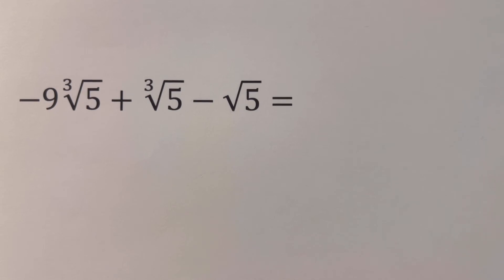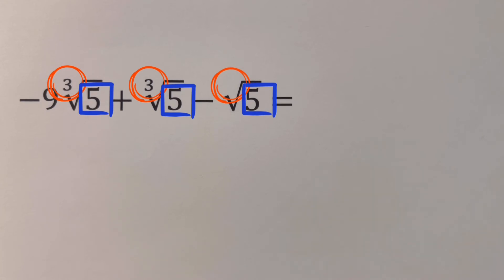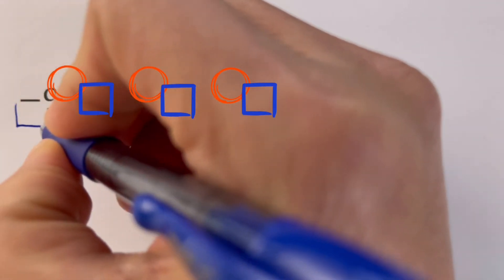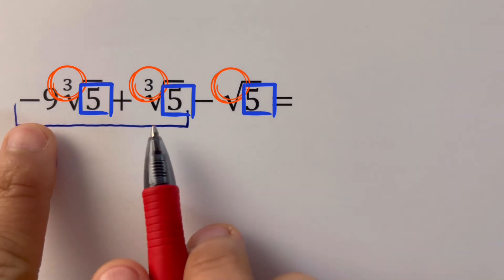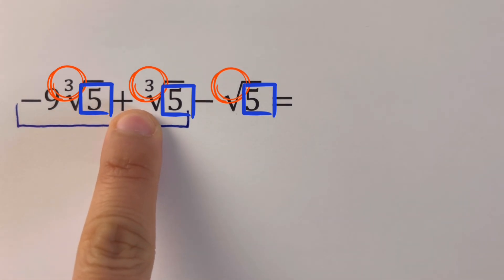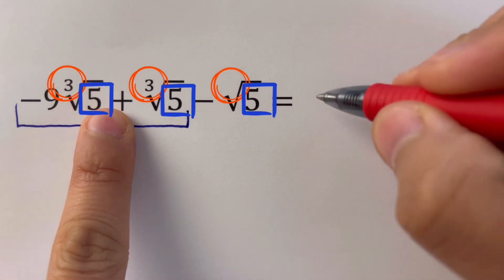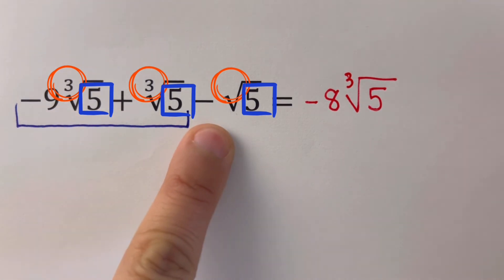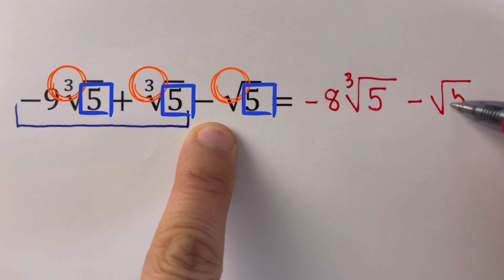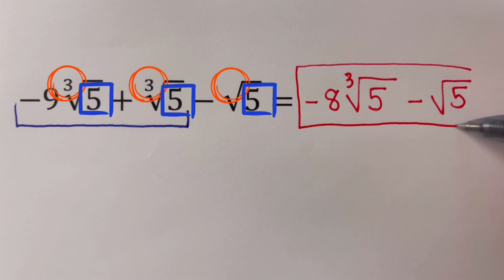The three indices here are 3, 3, and 2 — they are not all the same. Only the first two share the same index. Although all radicands are 5, the indices differ, so only the first two expressions are like radicals. We add those two coefficients: negative 9 plus 1 (the invisible one) equals negative 8, giving us negative 8 times the cube root of 5. Then we write the remaining term: minus the square root of 5. We cannot simplify further because the indices 3 and 2 are not the same. So the final answer is negative 8 times the cube root of 5, minus the square root of 5.